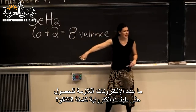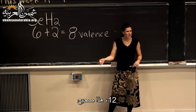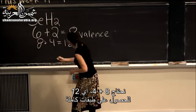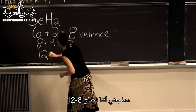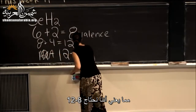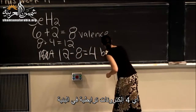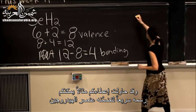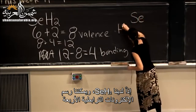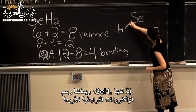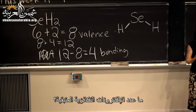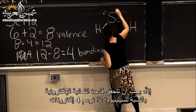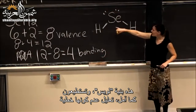How many electrons do we need to have full valence shells? Twelve — eight plus four. That means we need twelve minus eight, or four bonding electrons in our structure. So we have SeH2 with four bonding electrons. How many valence electrons do we have left? Four. So we need to fill the octet for selenium with two lone pairs. This is our Lewis structure.